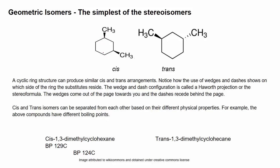Our ring structure is the longest carbon chain, so this would be cyclohexane. We start at one substituent and number to the other — going either way we get a one and a three, so this is 1,3-dimethylcyclohexane. Because we can have two stereoisomers — cis and trans — we need to add the stereo indicator telling us where the substituents are in relation to one another: cis or trans.